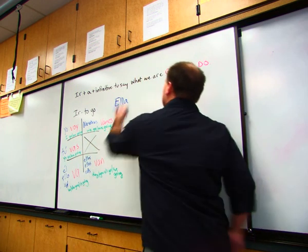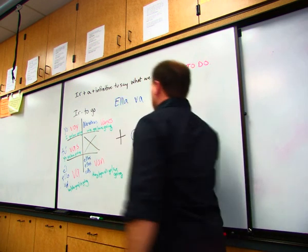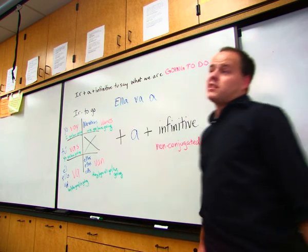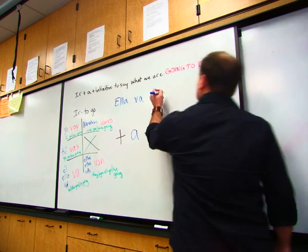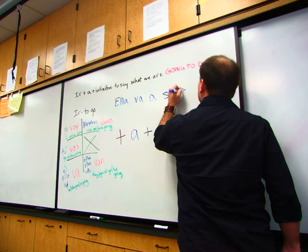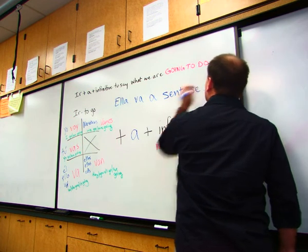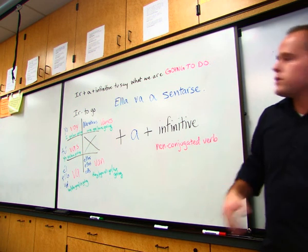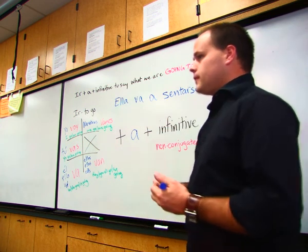Ella va what? Do you know what to sit is? It's a reflexive verb. We haven't learned those yet. But it would be sentarse. Because it's reflexive, meaning she's just going to sit. Ella va a sentarse.